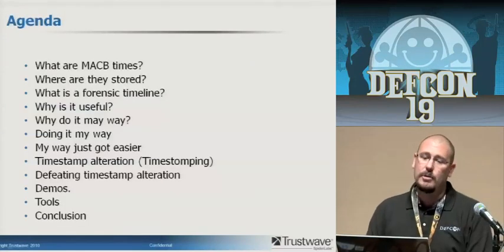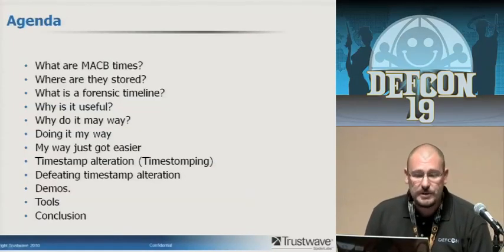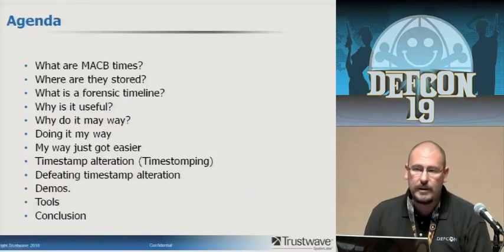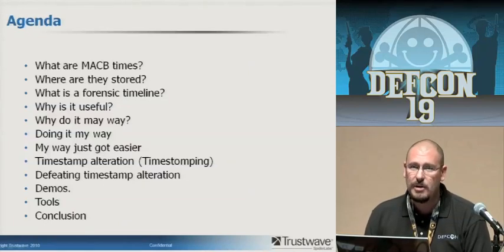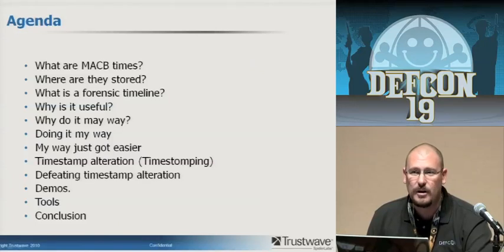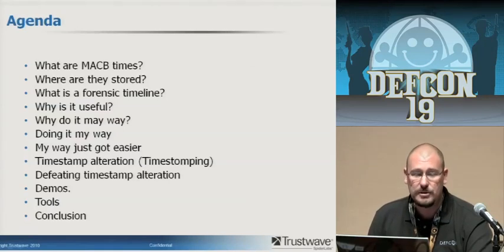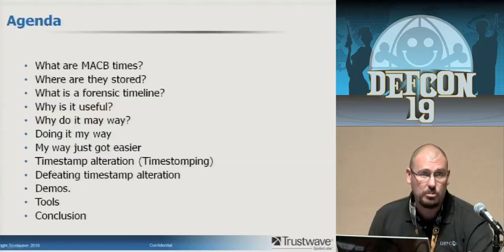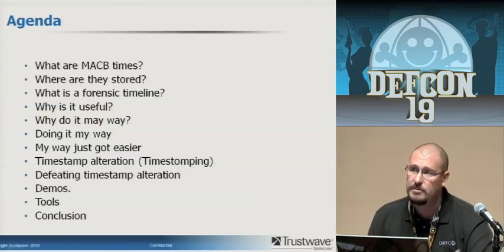Here's the agenda for the talk. We're going to go over what MAC times are, where they're stored, what a forensic timeline is, why it's useful, why do it the way that I do it, and then a little bit about actually doing it. A new tool that's come out recently has made the way I do it almost entirely automated. Then we're going to get into time stamp alteration and time stomping, looking at how hackers have been using timestamp alteration to hide malware. I'll show you how to defeat timestamp alteration, and if we have time, I'll do some demos — creating a super timeline, extracting the master file table, parsing it, and showing what some modified timestamps look like. We'll go through the tools and then do the conclusion.